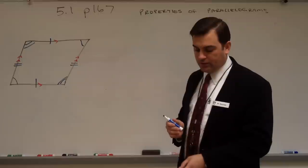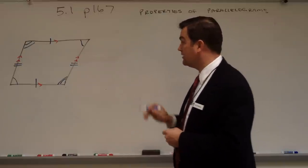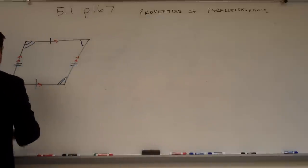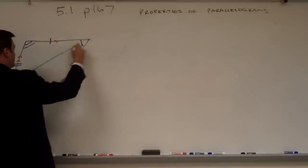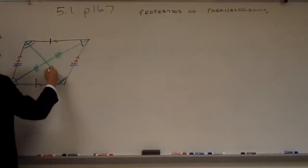The final property that we learned, page 167, Theorem 5.3, the diagonals of a parallelogram will bisect one another. I'll do that in green. These two diagonals bisect each other.